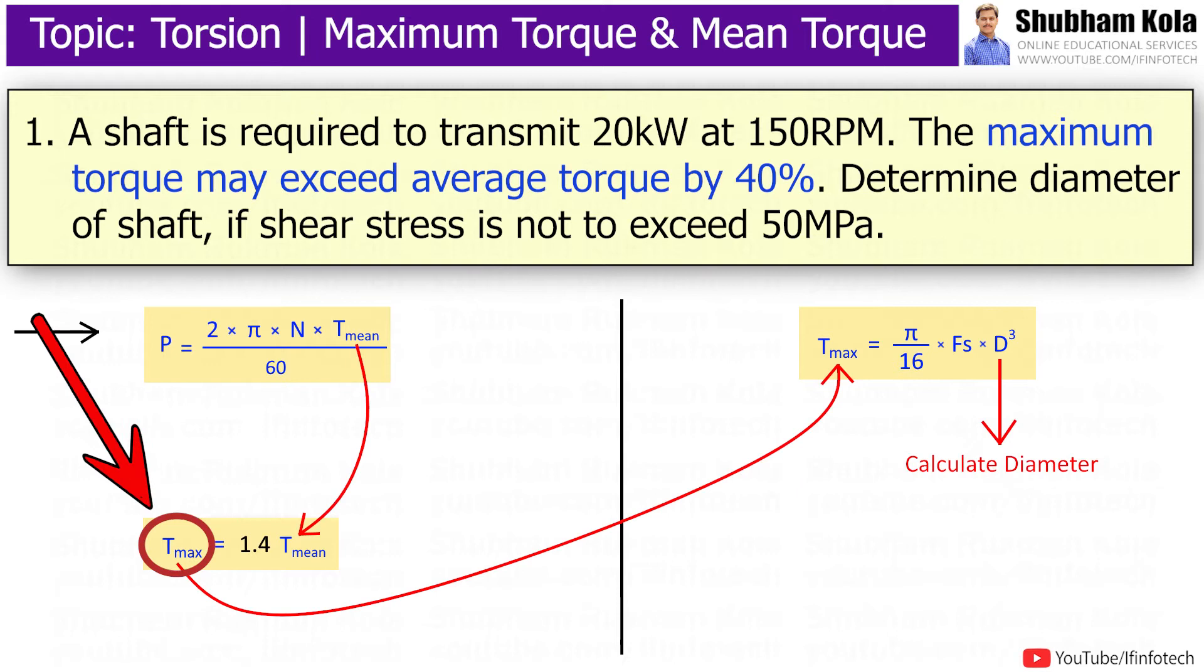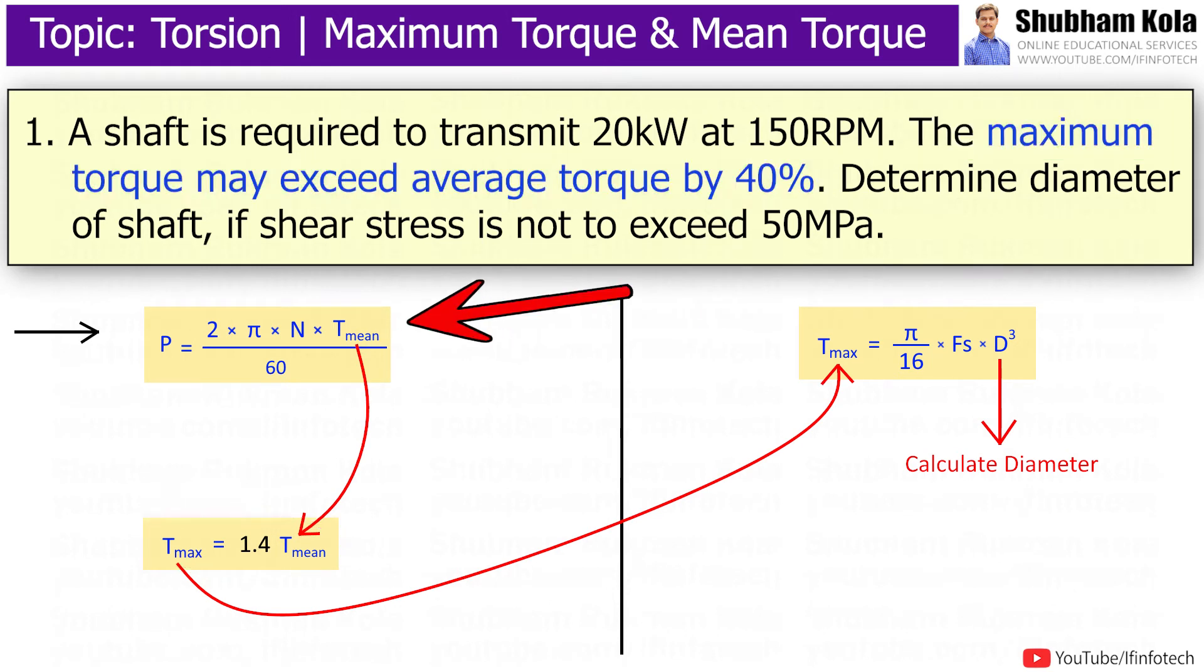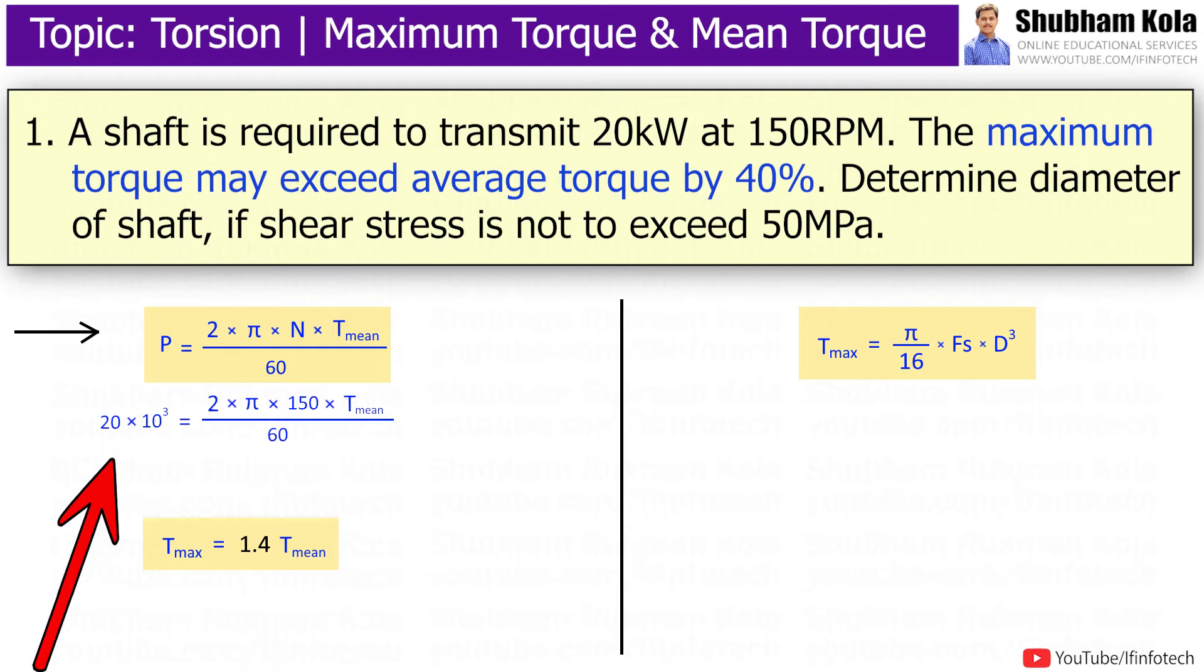To calculate diameter of shaft, first we need to have the value of maximum torque. The relation between maximum torque and mean torque, i.e. average torque, is given in the problem. And mean torque T_min is calculated by formula P = 2πNT_min/60. Here power is 20×10³ and speed is 150rpm. So I will put the values and calculate mean torque: 1273.23 Nm.